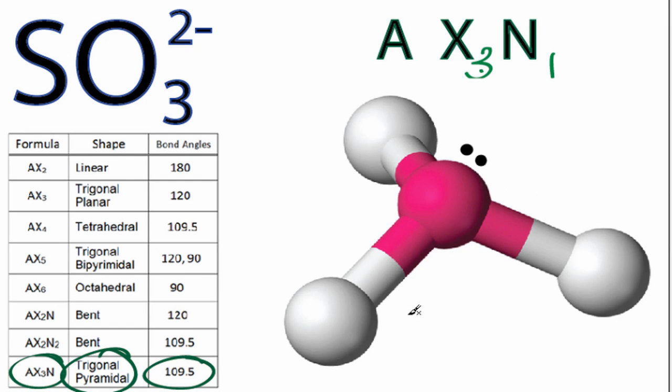So for the trigonal pyramidal, the bond angles are 109.5 degrees, and that's the same as these bond angles here and this one here.